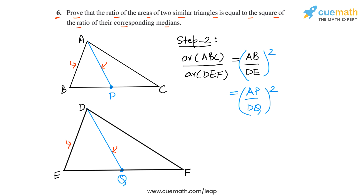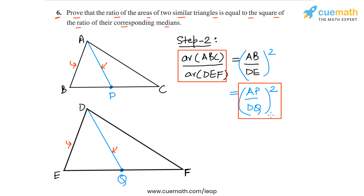So what have we obtained? On the left-hand side we have the ratio of areas, and on the right-hand side we have the square of the ratio of corresponding medians. This completes our proof that the ratio of areas of two similar triangles is equal to the square of the ratio of corresponding medians. As you can see, the proof is very simple.